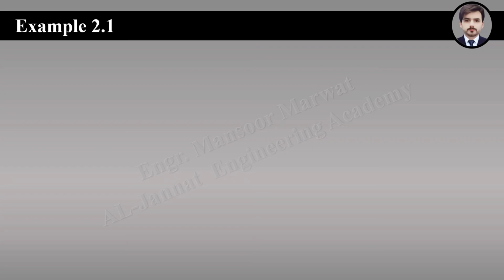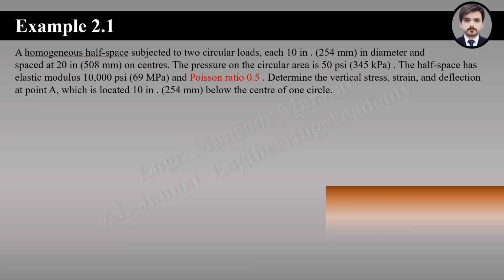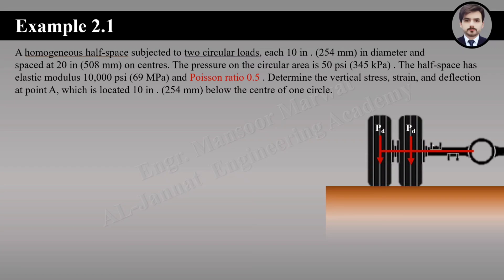In this video we are going to discuss how to solve the problem of one-layer theory. The first and important step is to read the question very carefully. A homogeneous half space is subjected to two circular loads — dual tires each 10 inches in diameter, meaning their impact area radius is 5 inches, spaced 20 inches on center. The pressure on the circular area is 50 psi, the elastic modulus is 10,000 psi, and the Poisson ratio is 0.5.